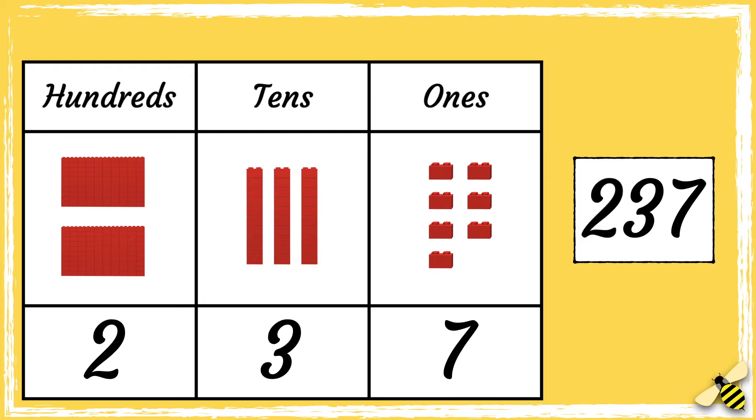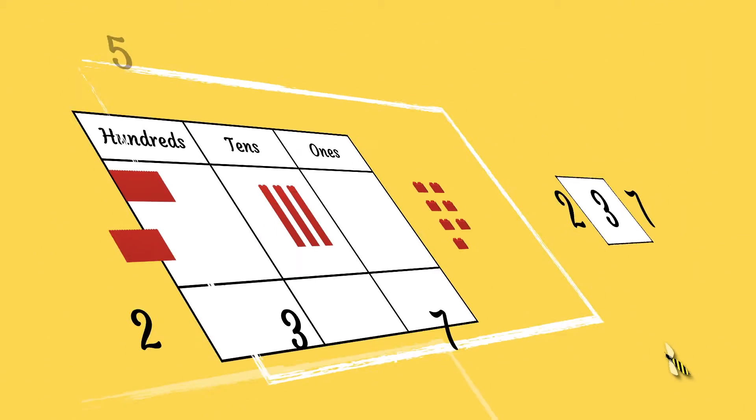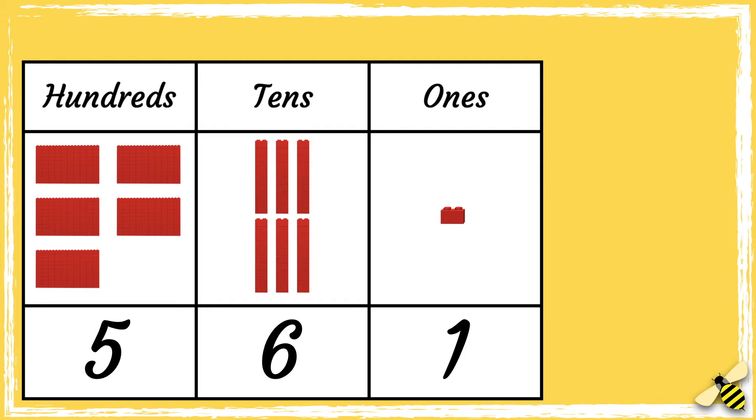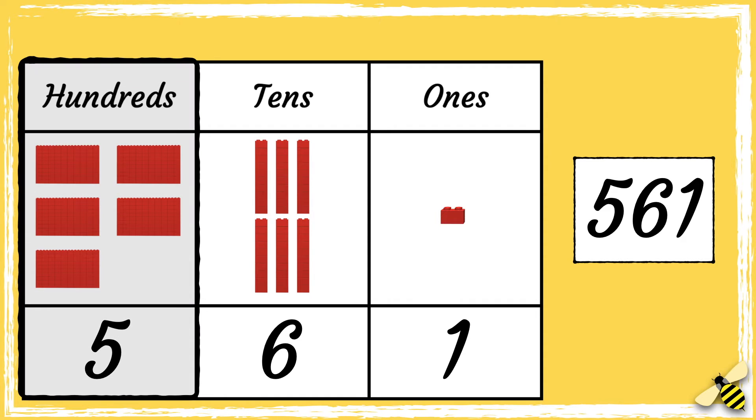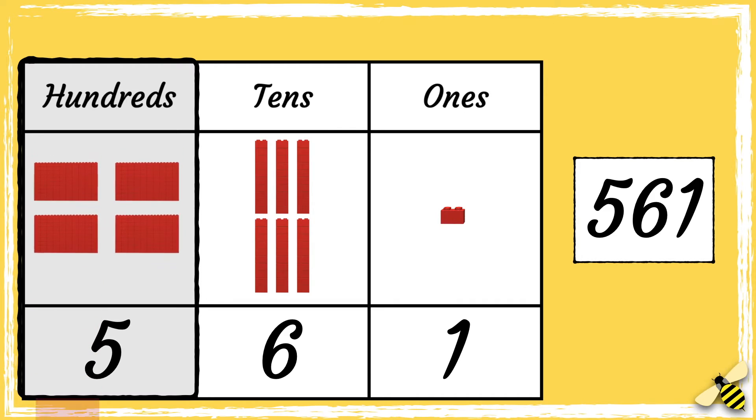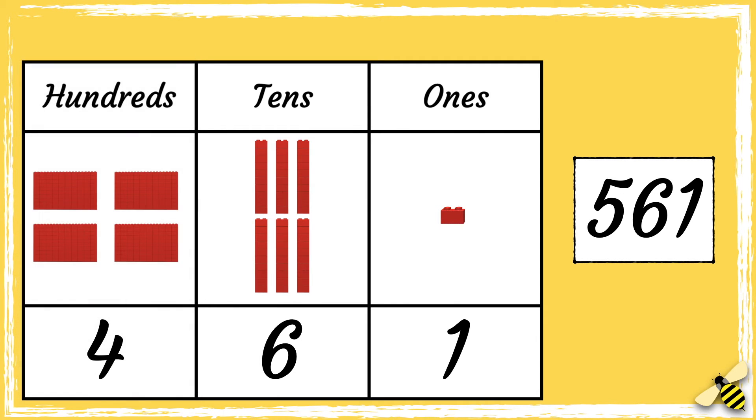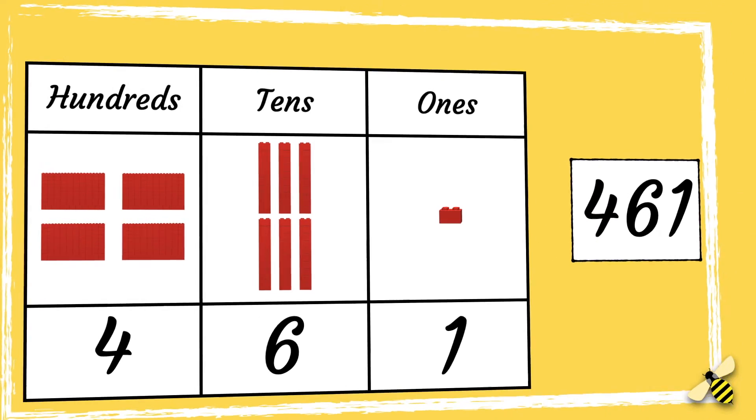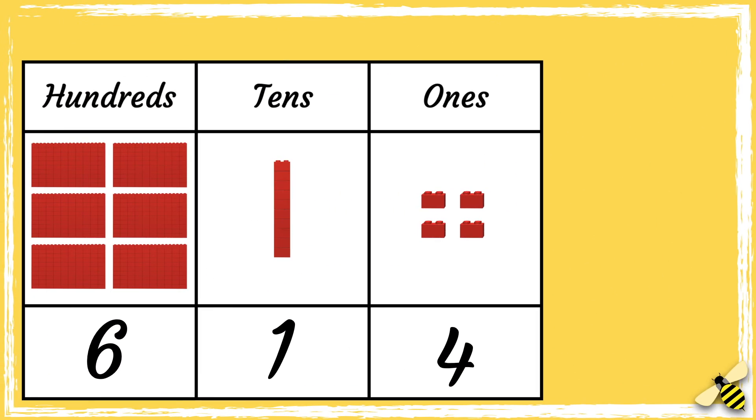Now let's have a look at 100 less. Here is the number 561. When we take away 100 from a number, we need to look at the hundreds column. So let's take away 100. Five hundreds becomes four hundreds, so the new number is 461.